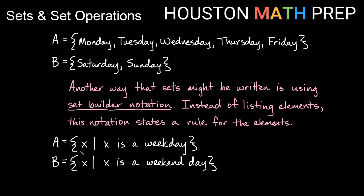Here is set A in set builder notation. We have our curly brace to start the set and then we say X. So this is the set of all things we're calling X. This line tells us that the rule for X is coming after. So the set of all things we'll call X such that X is a weekday. Our set B is just defined as all objects such that our object is a weekend day. So instead of listing the elements, we might use set builder notation. That's very handy especially if the set has a lot of elements in it and we don't want to have to list them all out individually.